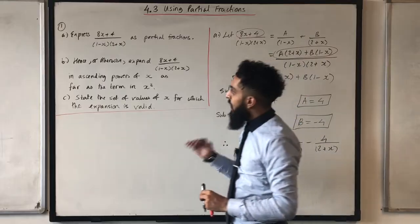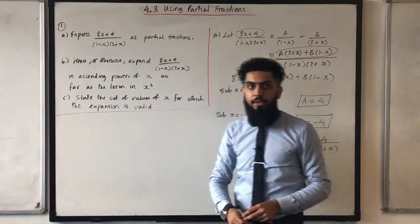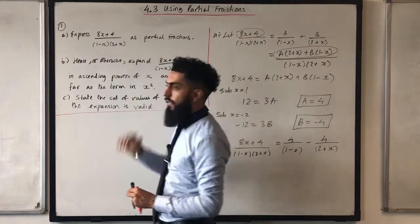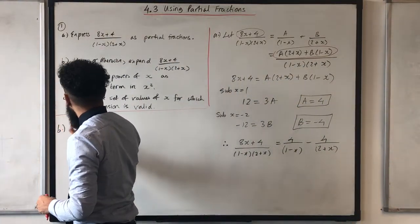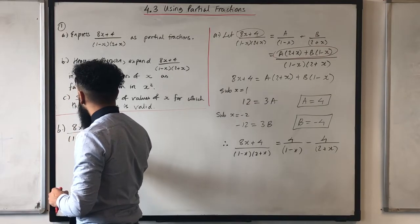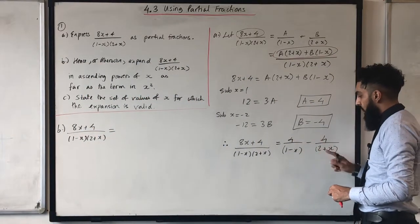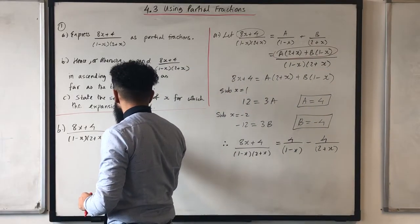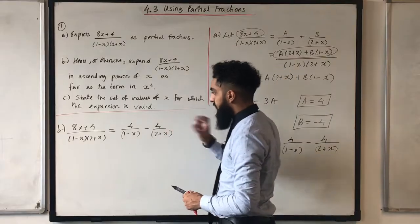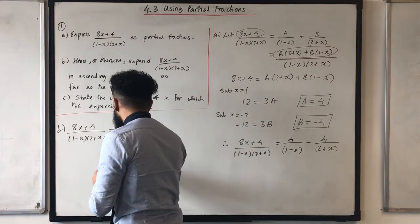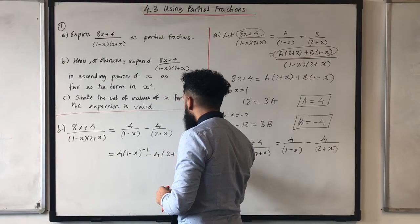Moving on to part B: hence or otherwise expand this particular fraction in ascending powers of x as far as the term in x squared. Whenever you see the word 'hence', you go to the previous part of the question. For part B, I conclude that 8x plus 4 over (1 minus x)(2 plus x) equals 4 over (1 minus x) minus 4 over (2 plus x). I then rewrite these as 4(1 minus x) to the power minus 1, minus 4(2 plus x) to the power minus 1.